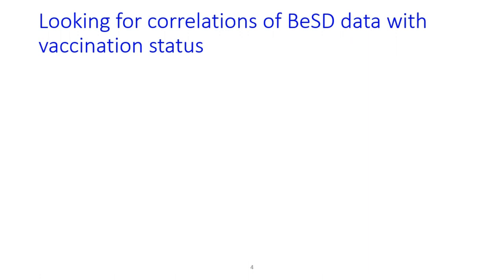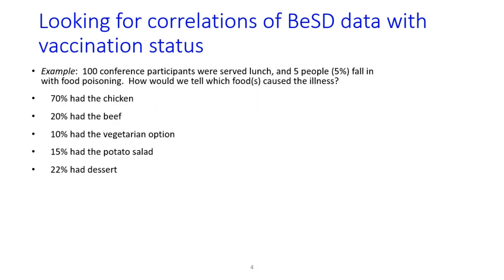Let's use an example that may take you back to graduate school days. Say that 100 conference participants were served lunch and five developed food poisoning shortly afterwards. How would we tell which food caused illness? Say 70% of people had the chicken, 20% had the beef, 10% had the vegetarian option. Since most people had the chicken, it must have been the chicken that's the problem, right? Well, no — that's not how epidemiology works. We don't just look at the most common thing people ate.